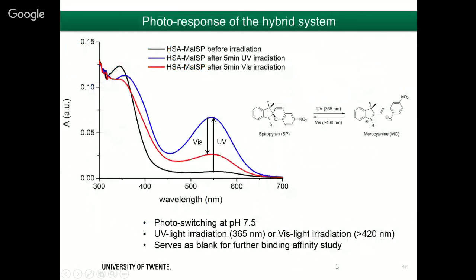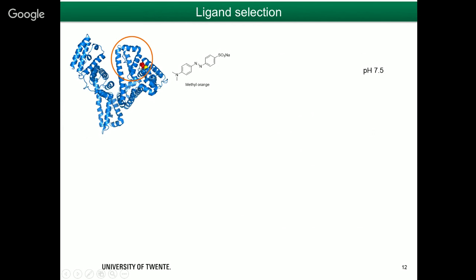We verify that the photoswitch is still functional when attached to HSA. Taking the HSA-maleimide-spiropyran hybrid and irradiating with UV at 365 nm, we see the appearance of the merocyanine absorption band at 535 nm and the solution turns pink. Subsequent visible light irradiation causes this peak to decrease back, indicating partial closure of merocyanine back to spiropyran. So UV opens and visible light closes the switch even when attached to the protein.